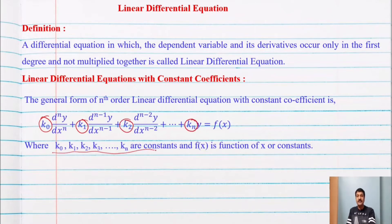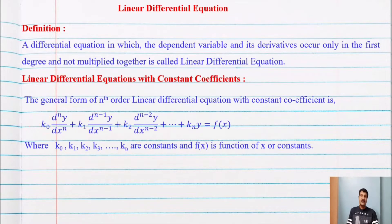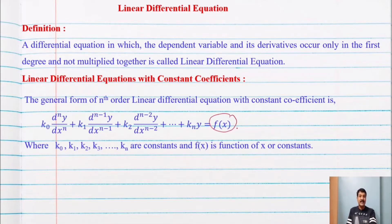These coefficients are constant and that is why it is called the linear differential equation with constant coefficient. Here f of x is the function of x — it may be sin x, cos x, tan x, e raised to x, and so on.